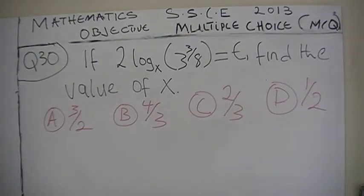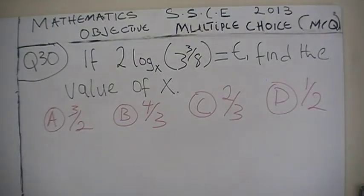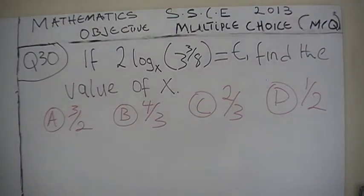Mathematics Senior School Certificate Examination, May/June 2013. Objective Multiple Choice Questions. Question 30: If 2 log x (3/8) equals e, find the value of x. Option A: x = 3/2.